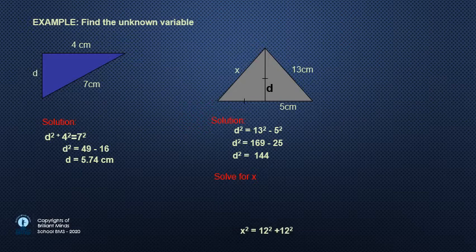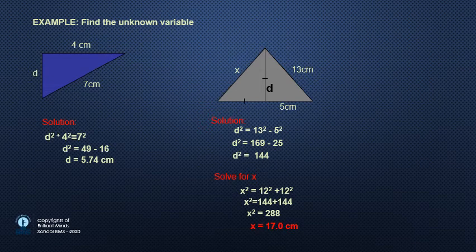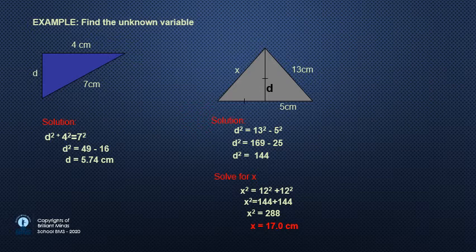To find the value of x, we have two sides equal 12. Then x is the hypotenuse, and x square equals 12 power 2 plus 12 power 2. Then x equals square root of two times 12 squared, which equals 17 centimeter.